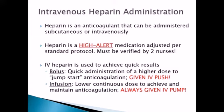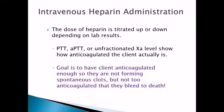The infusion is always given on an IV pump — heparin should never ever be running via gravity. The dose of heparin your patient gets is going to be titrated up or down depending on certain lab results. Depending on your facility, they may use PTT, aPTT, or unfractionated factor Xa levels to show how anticoagulated the client actually is. The ultimate goal is that we want the client anticoagulated enough that they're not forming spontaneous clots, but not so anticoagulated that they're bleeding. Think of it like a seesaw — you're trying to keep it balanced.